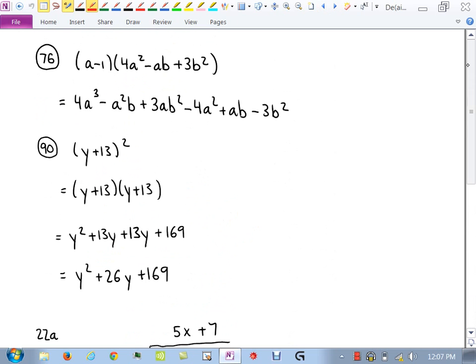Number 76. I have a binomial times a trinomial. So I'm going to multiply a times 4a squared, which gives me 4a cubed. a times negative ab gives me a negative a squared b. a times positive 3b squared gives me positive 3ab squared. And now I move to the negative 1 and distribute that through. So negative 1 times 4a squared is negative 4a squared. All that's happening here are signs are changing. Negative times negative gives me positive here. So positive ab. And then finally, negative 3b squared. None of those terms are like terms, so that's the answer.